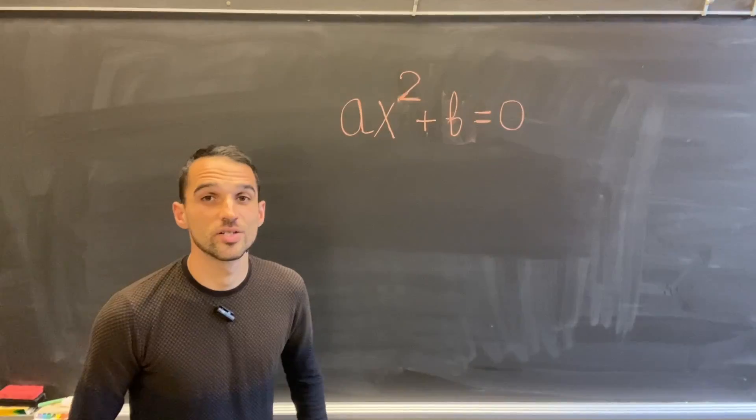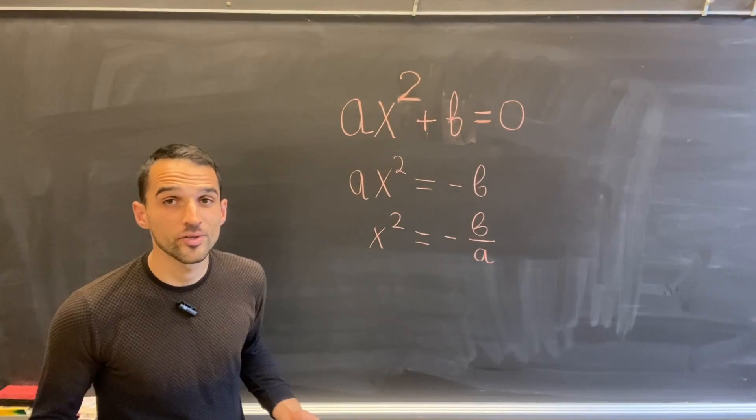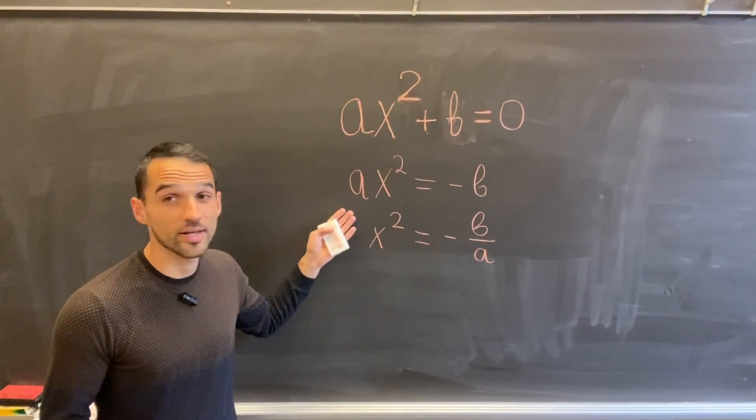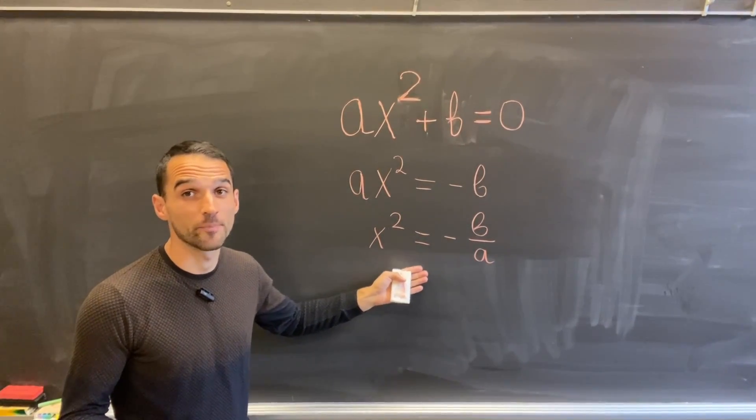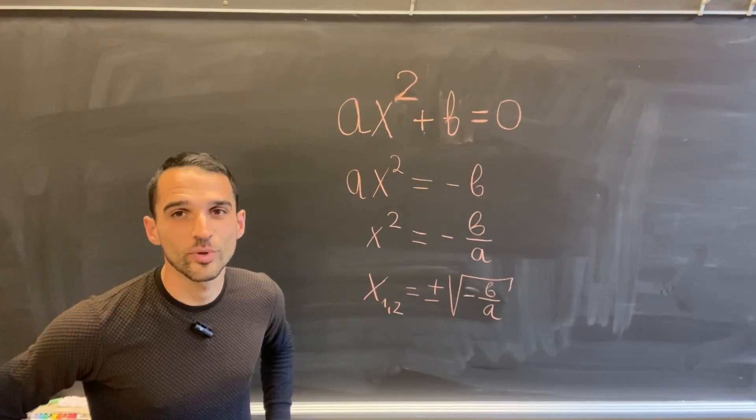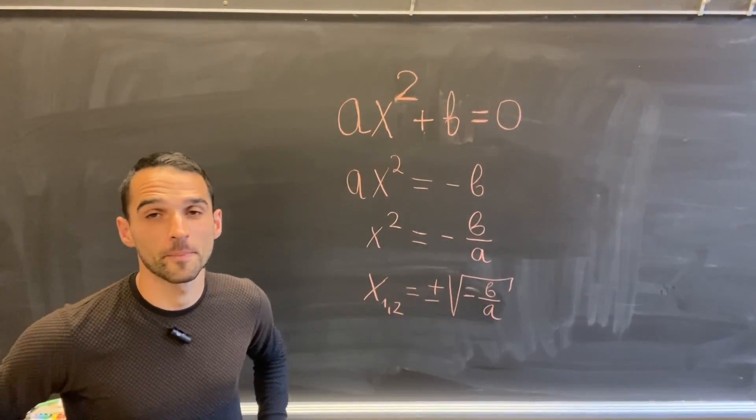So what if I have ax² + b = 0? I can do exactly the same thing as for linear equations. So ax² is -b, and then x² is -b over a, and then I'm done because x is just ± √(-b/a). These are called depressed quadratic equations, and I just showed that I can easily solve them.